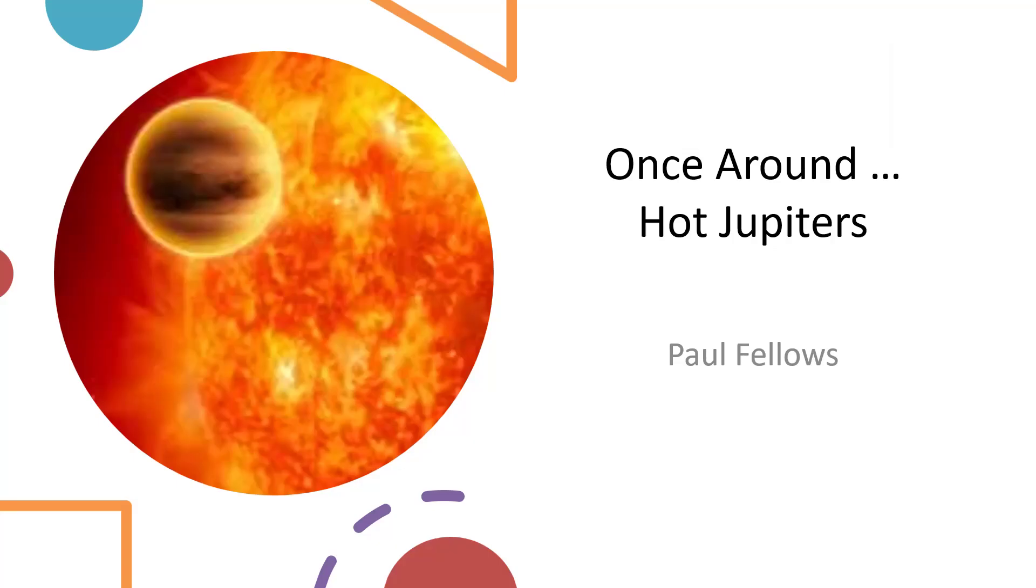Well, this talk, Once Around Hot Jupiters, is part of a set of talks aimed at the Cambridge Young Astronomers Group, which we're holding this weekend here in Cambridge. It's about exoplanets and planets around other stars and how we have located them in general. So let's get going with this one.